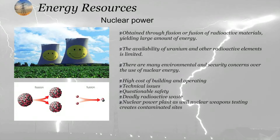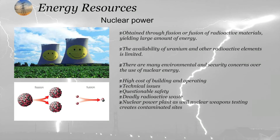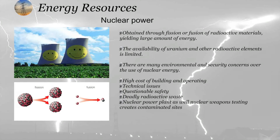There are two types of nuclear reactions: one is fission and another is fusion. Fusion means, as the name suggests, two smaller nuclei fuse to make a bigger nucleus. While in fission, one bigger nucleus breaks down into two smaller nuclei.